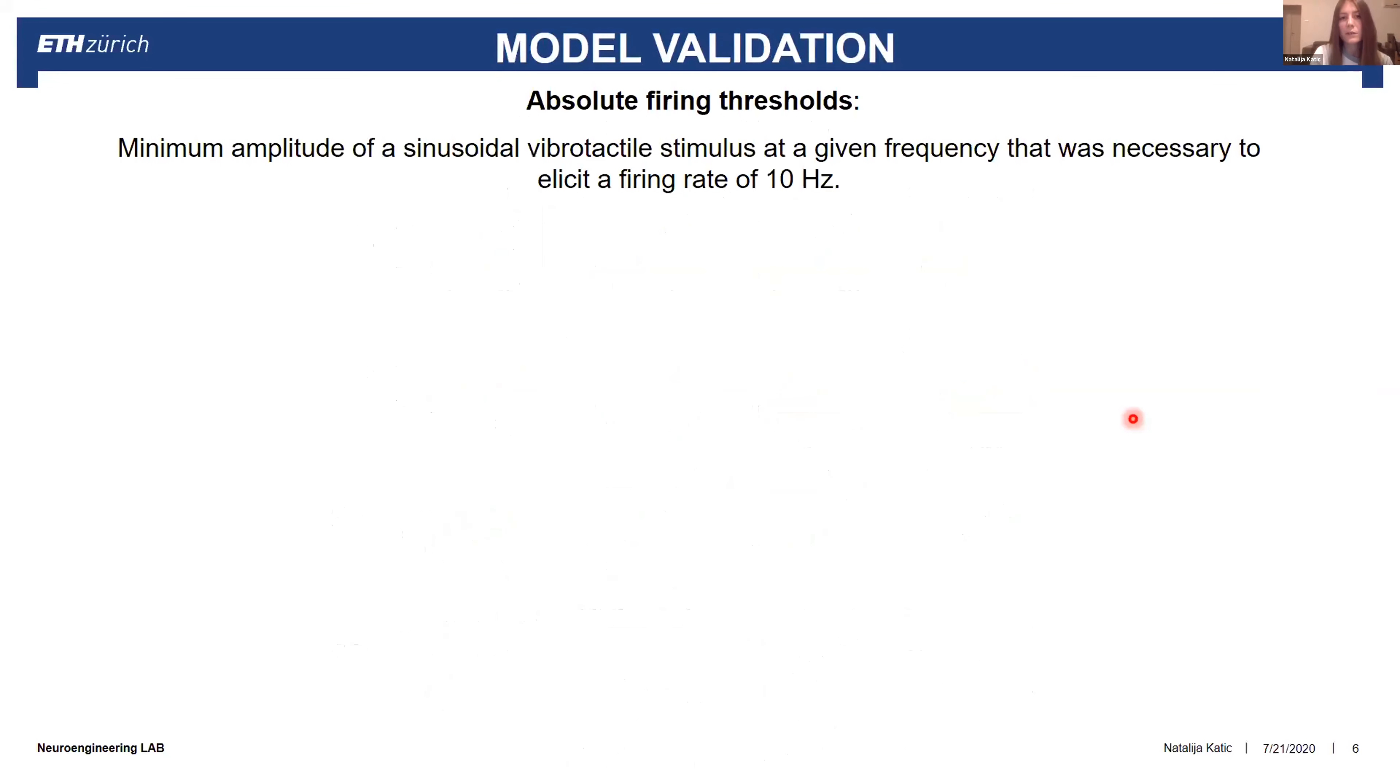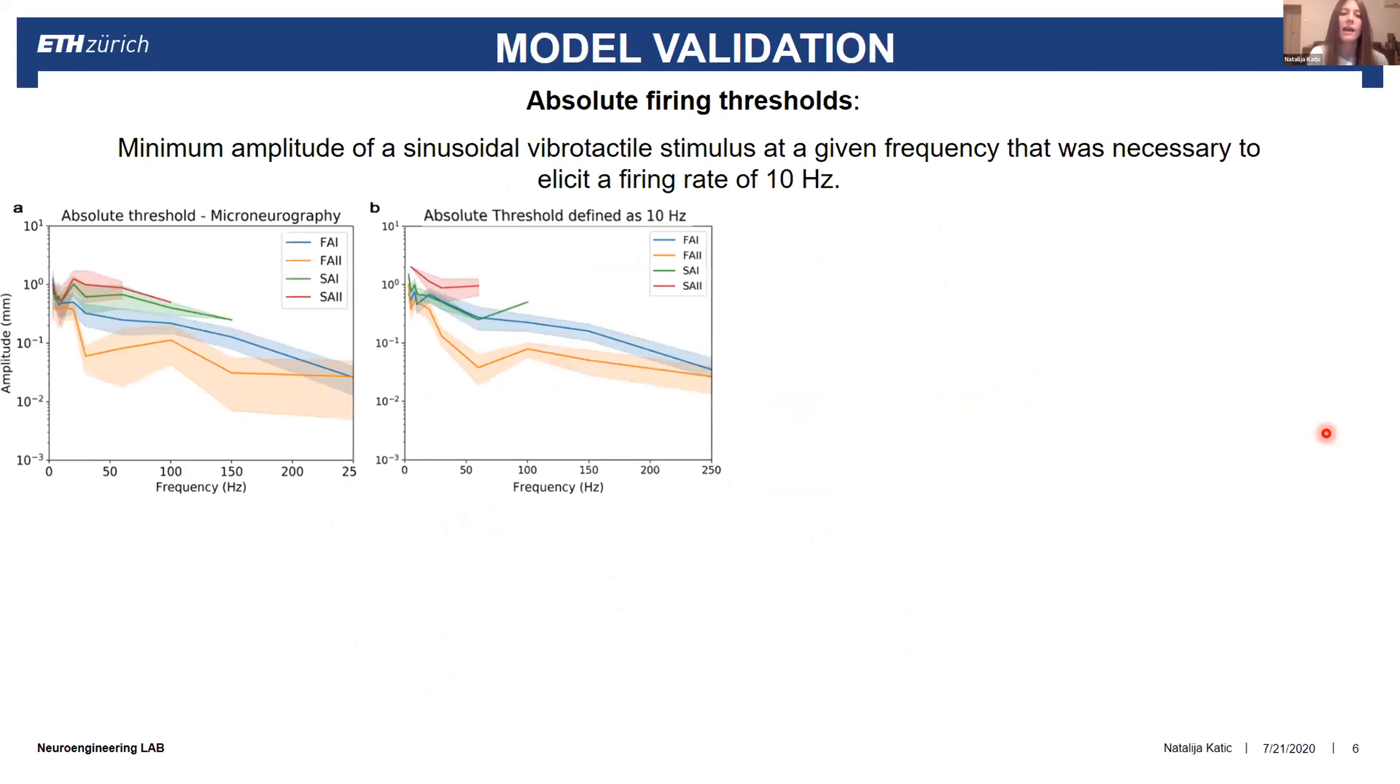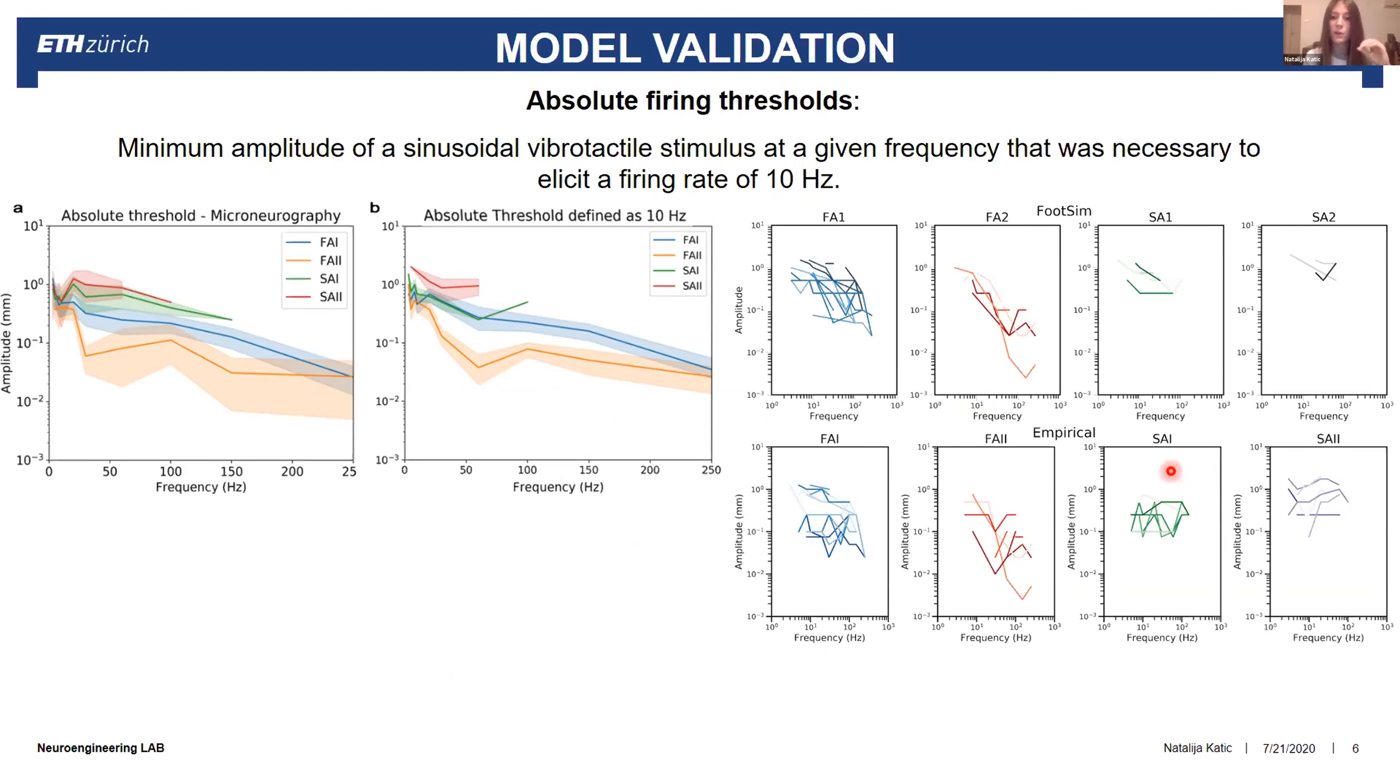We validated our model using absolute firing thresholds, which are defined as the minimum amplitude that was necessary to elicit a firing rate of 10 Hertz. Here we can see on the left how big the absolute threshold is depending on the frequency for the recorded data using microneurography and for the simulated data using our model. Here are separate individual models of the afferents recorded with microneurography and then when they're incorporated in the model, here is the result. And here is the actual root mean square value for all classes. This is the error of our validation set.